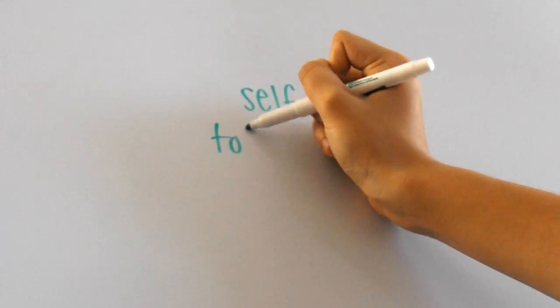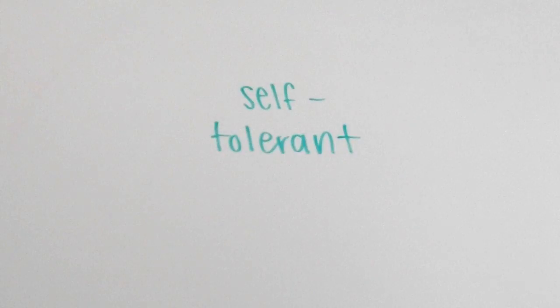One last thing that's innate in your body regarding the immune system is the fact that you are self-tolerant. This means that your immune system doesn't attack your own body cells.